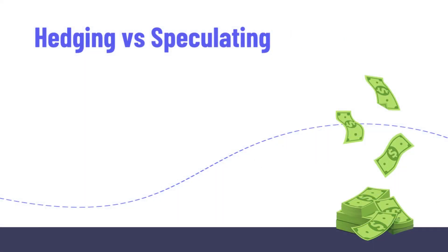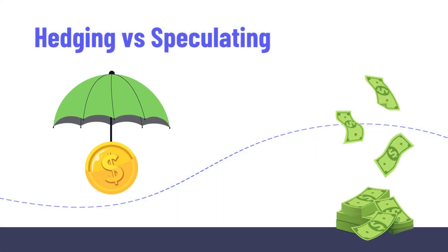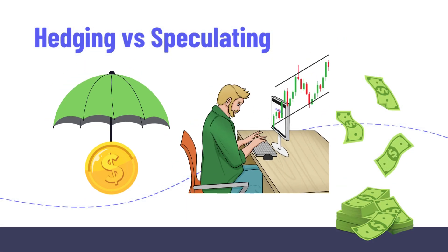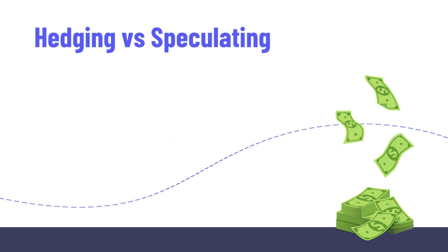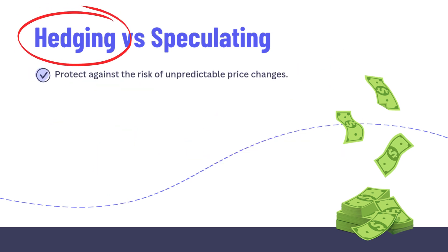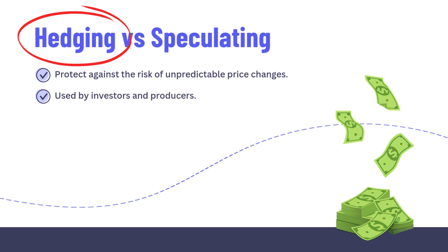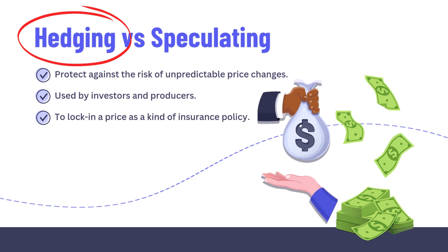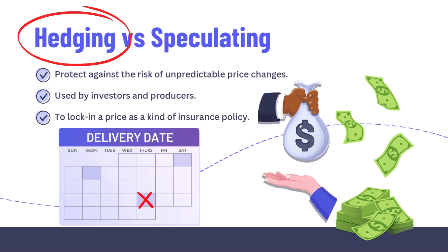There are two main ways that futures contracts are traded: either as a hedge or for speculation. Hedging is to protect against the risk of unpredictable price changes. Many investors and producers will use futures contracts to lock in a price as a kind of insurance policy. This allows farmers or other producers to know how much money they will make when they deliver the commodity or asset on the delivery date.